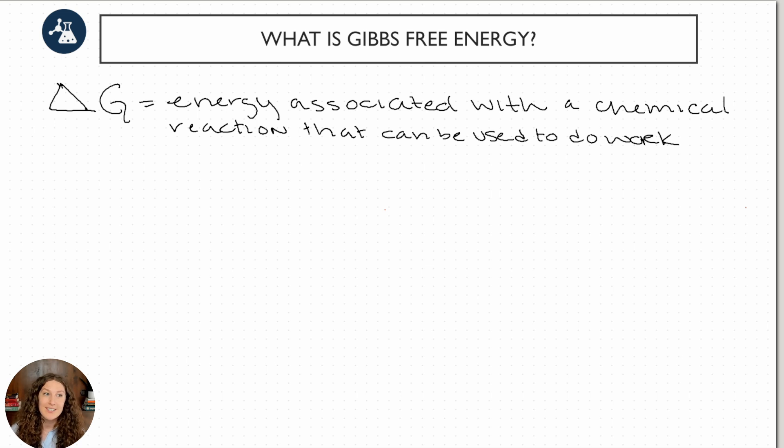Now remember, as with all deltas, this is our energy in our final state, G final minus our energy in our initial state, and that's going to give us our change in G. And this energy is usually calculated in joules per mole. Sometimes we'll need to convert to kilojoules per mole to do calculations with delta H, but this is often going to be our unit.